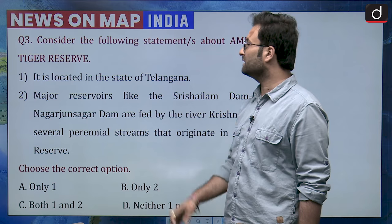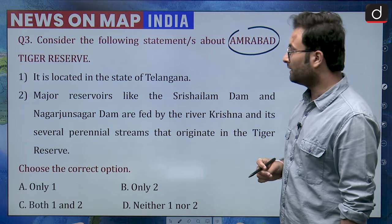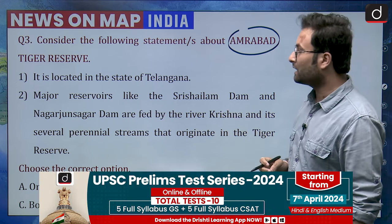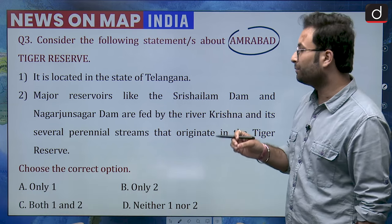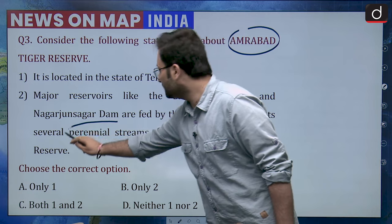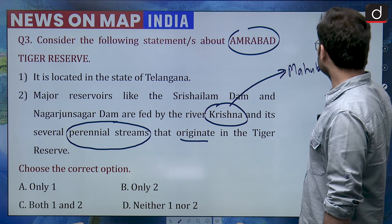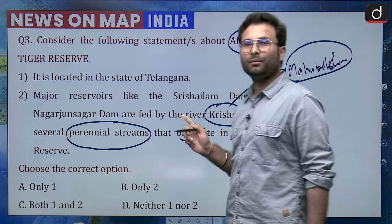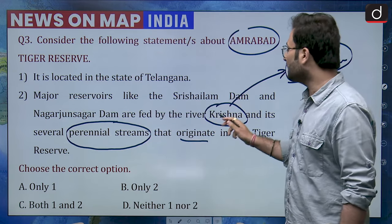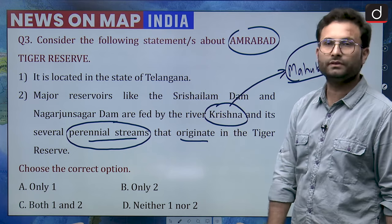Question number 3: consider the following statements about Amarabad Tiger Reserve. First, it is located in the state of Telangana. Second, major reservoirs like Sri Sailam Dam and Nagarjuna Sagar Dam are fed by the river Krishna and its several perennial streams that originate in the Tiger Reserve. Amarabad was in news recently because of forest fires. These fires are usually at peak during April, May, and June due to summer and dry climate, but this year forest fires are happening as early as March, which can be an effect of climate change and extreme weather events.